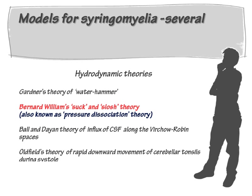The theories of Gardner, Ball and Dian, and Oldfield are easy to conceptualize. However, Bernard Williams' theory causes some confusion because of different interpretations of his work by different authors. In this short presentation, I will try to highlight the important concepts of Bernard Williams' theory.